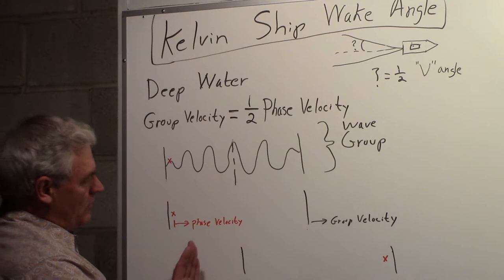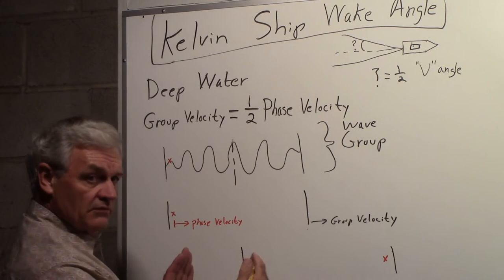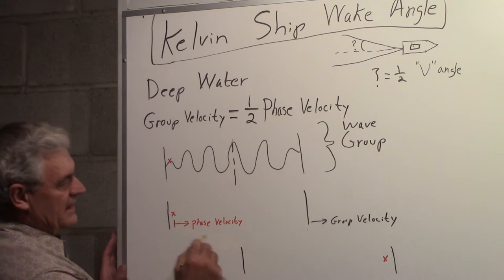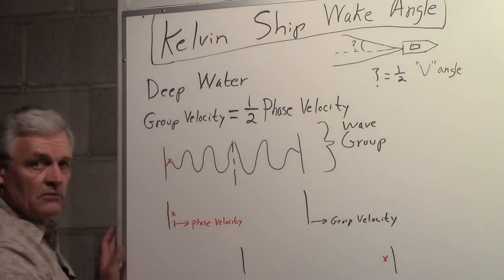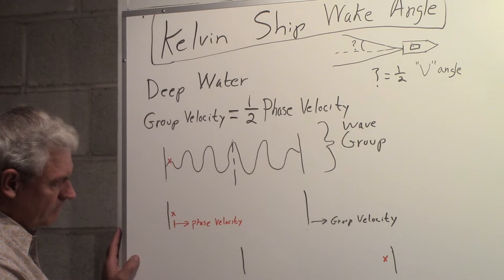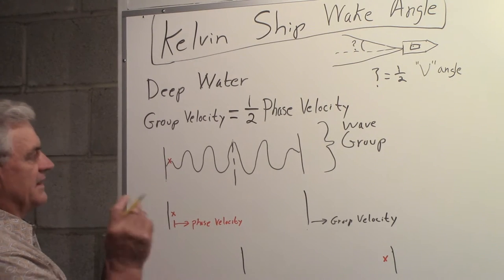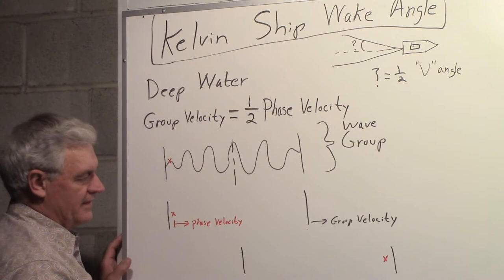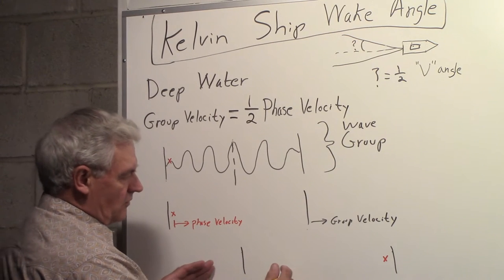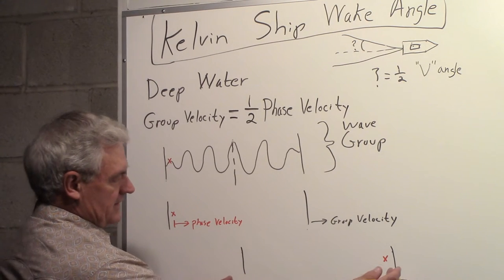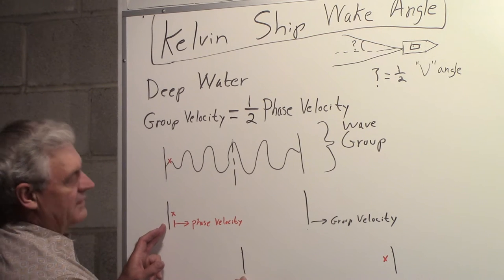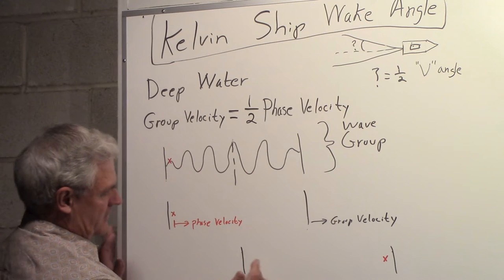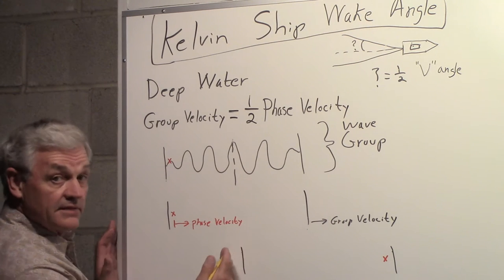If I move the group, imagine the group wave propagating, and it propagates this far, the phase velocity will propagate twice as far. The group velocity is one half the phase velocity, or the phase velocity is twice the group velocity. The distance the group moved, from the end here to here, the phase velocity has moved all the way across, because I picked this as being one half.